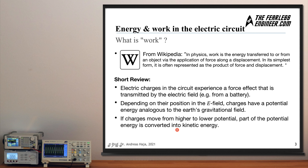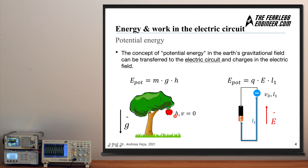The electric field causes a charge to move from one position to the next and transfers potential energy into kinetic energy — it converts one energy form into another energy form. On this slide you can see the example with the apple hanging from a tree. The apple is hanging at a certain height above ground, and in this position its velocity is zero — it's still hanging from the tree.